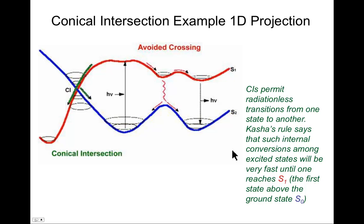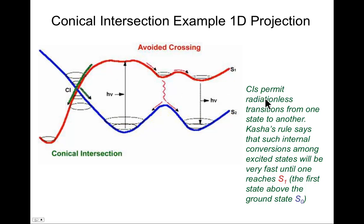If we project into a single geometric dimension, that makes it look more as though there is indeed an intersection of two cones at a point. In this system I have curves labeled S1 and S2, and they cross at a certain point. Conical intersections permit radiationless transitions from one state to another.